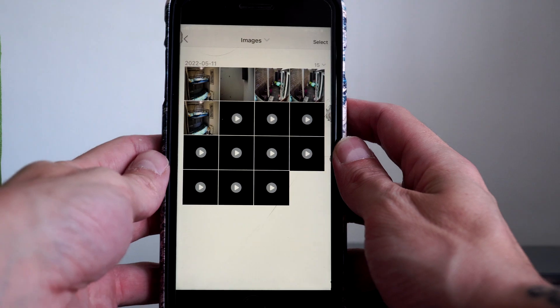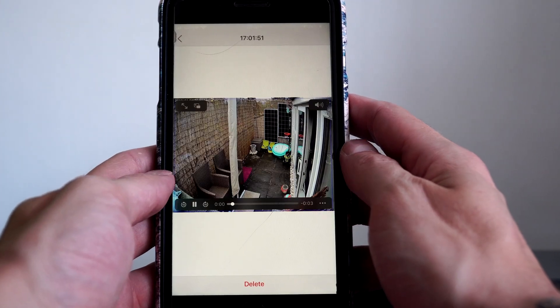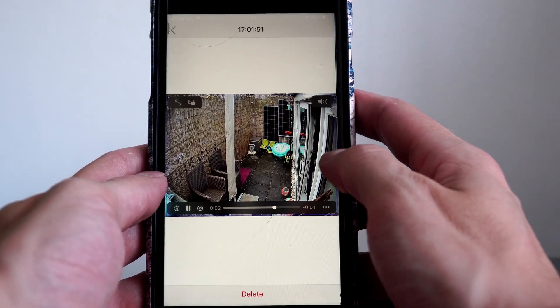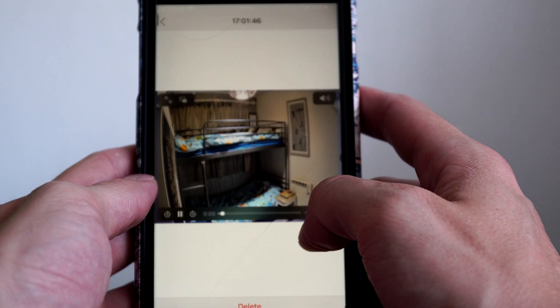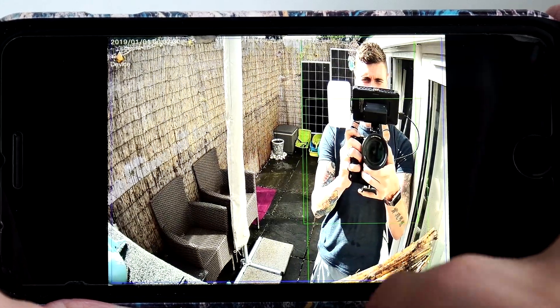Now on the app, you go to the little person icon in the bottom right corner, and then images. This is where my footage is saved from the motion detection, or from me pressing the record button on the screen for anything that I wanted to manually record.